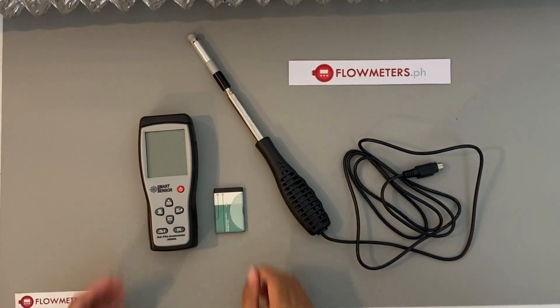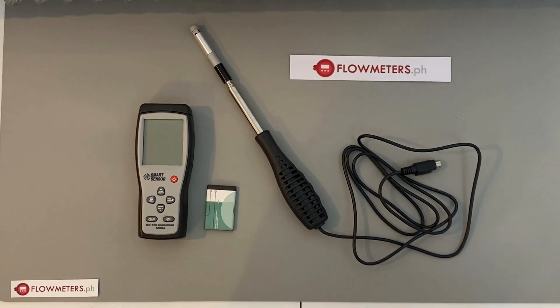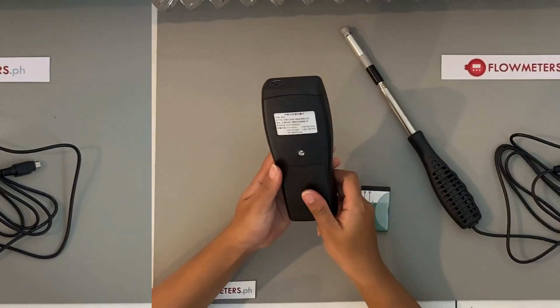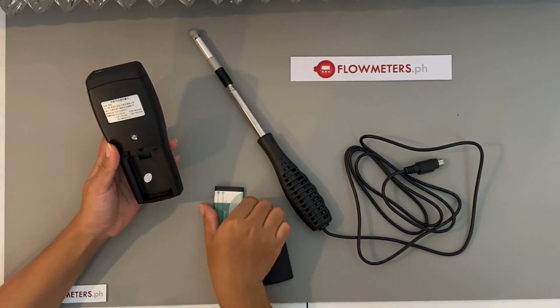Here's how to operate a hot wire anemometer, a handy tool for measuring air velocity and temperature. First, remove the battery cover and install the battery. Make sure it's securely in place.